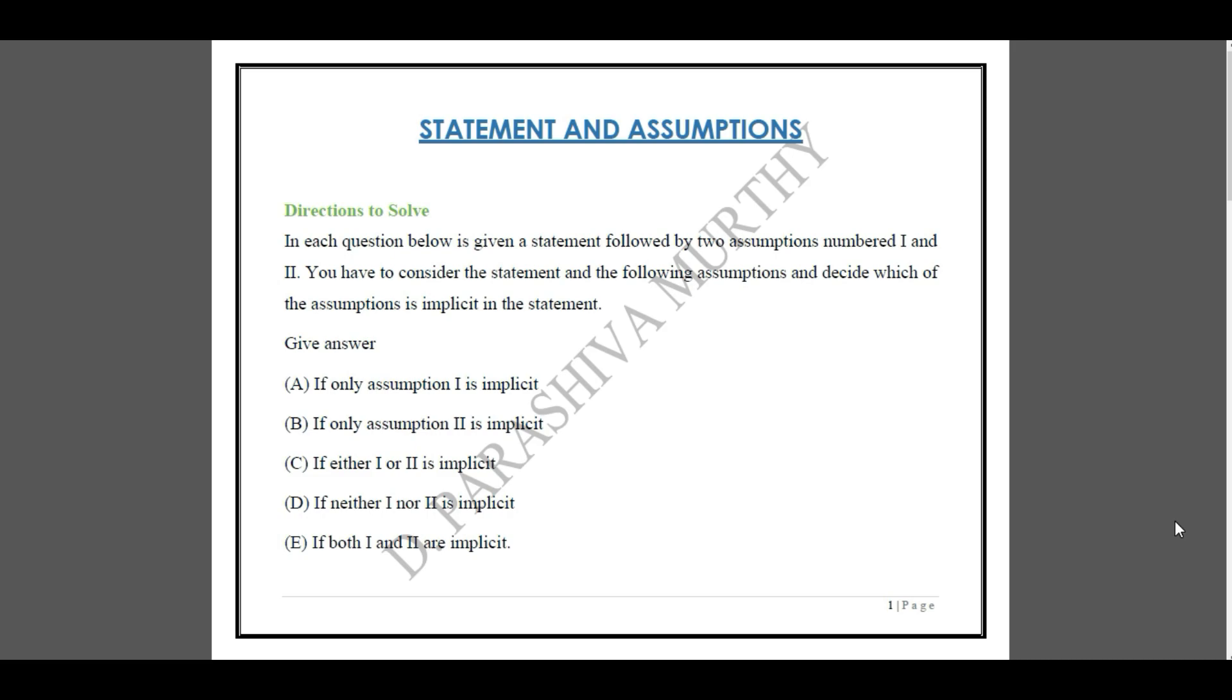Usually you have five answers which are clearly given in these examinations. If you think assumption number one holds good for the statement, mark A as the answer. If you think assumption two is correct, mark B as the answer. If you think the answer is either assumption one or two, then mark C. If you think both are not correct, then mark D. If you think both are correct, mark E.